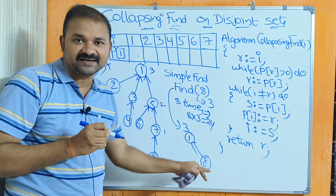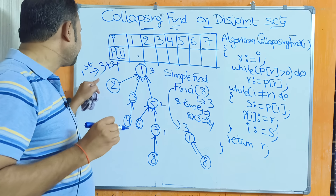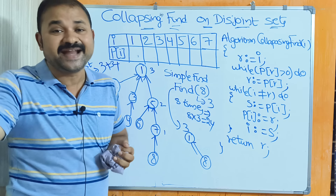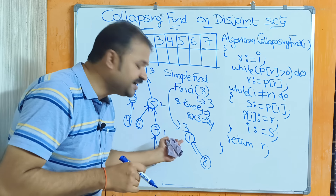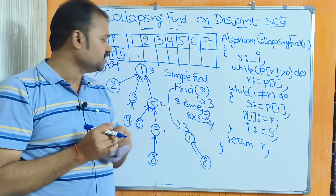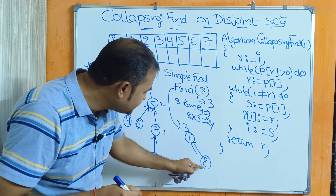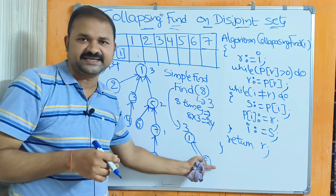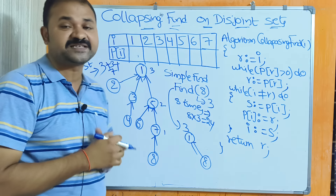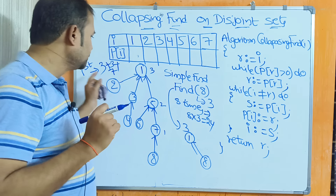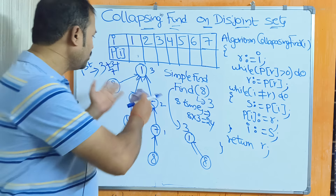For resetting the links, 3 more comparisons are required, so the first find operation costs 3 plus 3 equals 6 comparisons. For the next 7 find operations, only 1 comparison is enough each time, because 8's immediate parent is now the root node directly. So 6 plus 7 equals 13 total comparisons. With simple find it was 24, so collapsing find is more efficient.